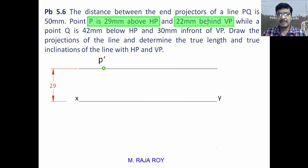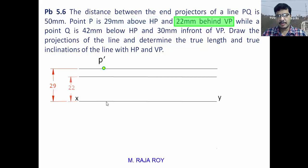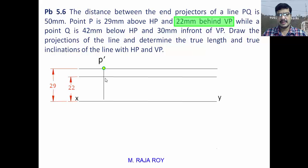Point P is 22mm behind VP. Behind VP means the top view will come above the XY line. So draw another locus line 22mm above XY. From P dash, draw a projector onto this locus line — where it intersects you will get point P (the top view). So P dash and P are now located.